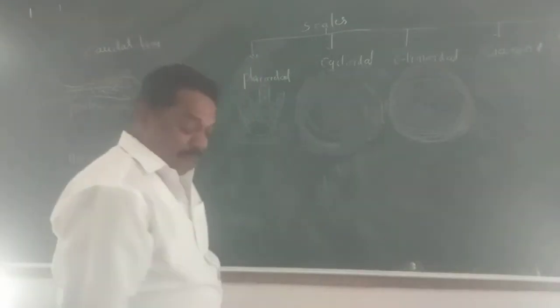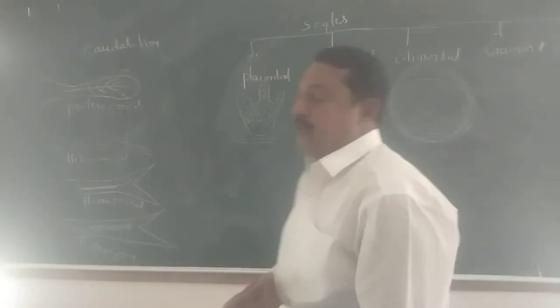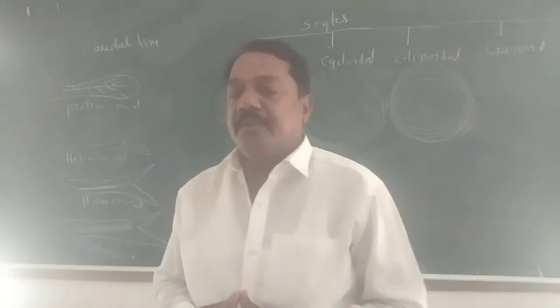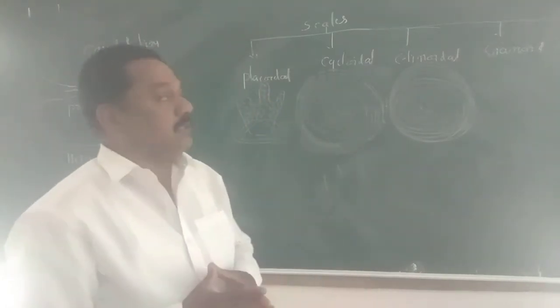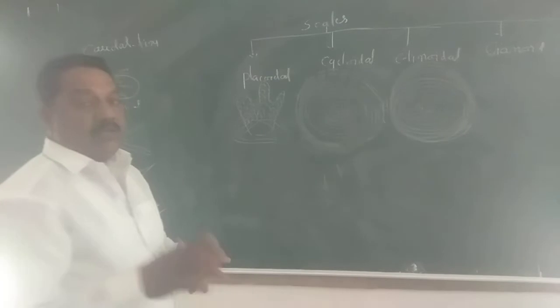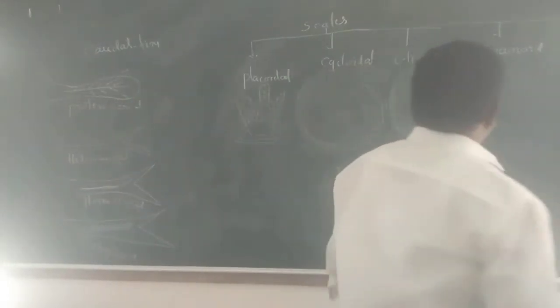Today I am discussing special topics in fishes - scales. Generally the animal body is covered by scales, the complete animal body is covered by scales. Scales are in the form of exoskeleton system. Generally scales are classified into five main categories: placoid, cycloid, ctenoid, ganoid, and cosmoid.